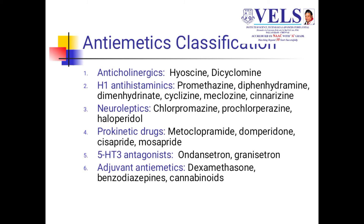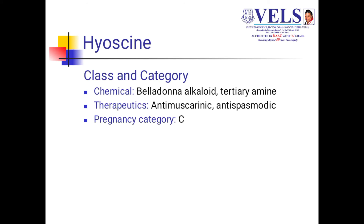5-HT3 antagonists like ondansetron also have anti-emetic properties. Adjuvant anti-emetics include dexamethasone, benzodiazepines, and cannabinoids. Coming to individual drugs — we will discuss pharmacological action, ADME, and contraindications for each. First, we will see hyoscine. Chemically it comes under the category of belladonna alkaloids. It is a tertiary amine and therapeutically used as an anti-muscarinic and anti-spasmodic agent. Muscarinic receptors are present in the vomiting center and in the NTS.